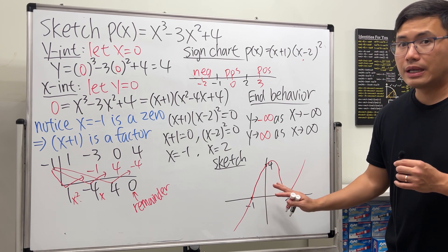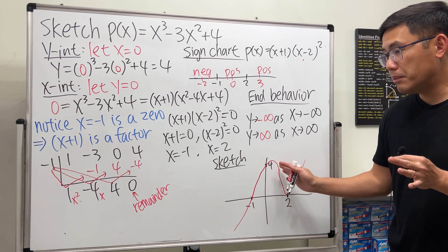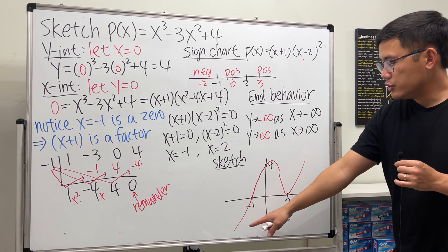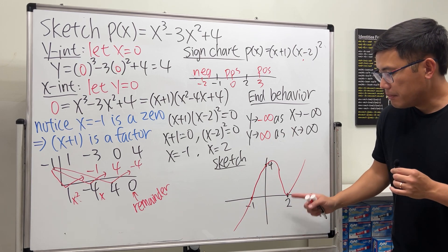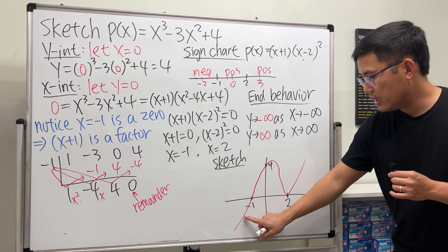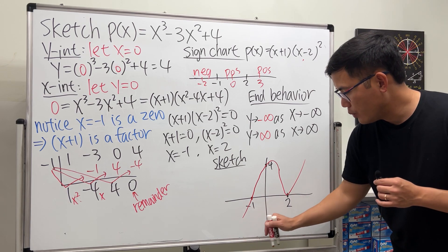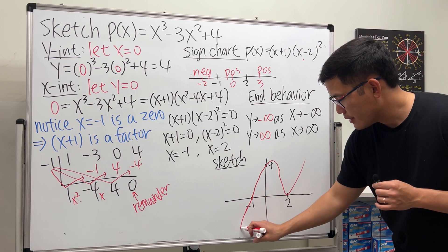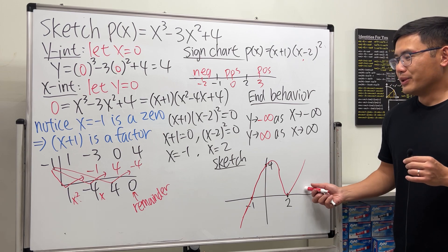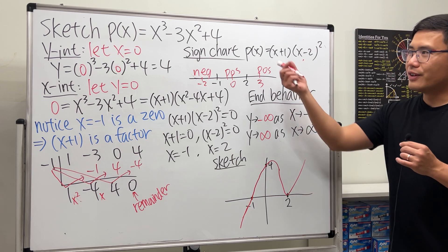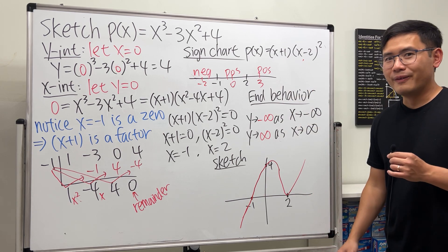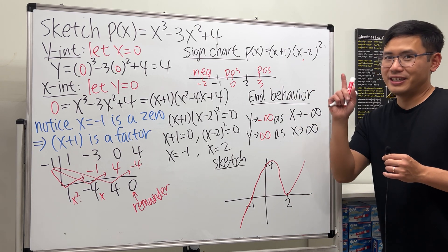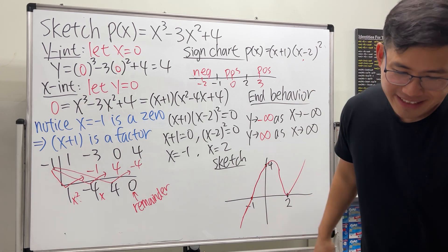You don't have to worry about exactly where the maximum is — just keep the general shape correct and you'll be good. This is the pre-calculus way to sketch a cubic polynomial. If you want to see another example, check out the other video.